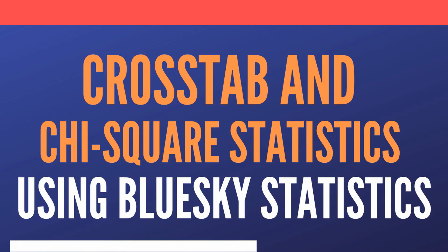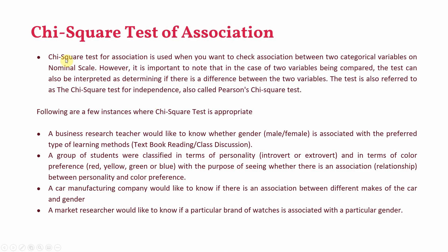In this session we are going to look into cross tab and chi-square statistics using Blue Sky Statistics software. Cross tab is used to describe the relationship between two variables. If you want to further assess the significance of association between two variables, you are going to use chi-square.